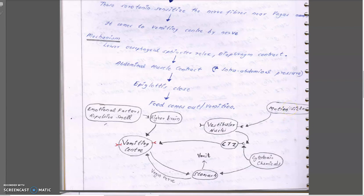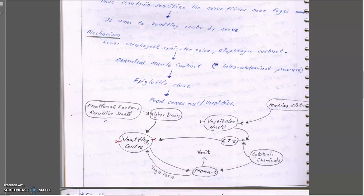Looking at the diagram: motion sickness produces signals sent to the vestibular nuclei, which via its receptors send the message to the CTZ. The CTZ induces vomiting via the vagus nerve to the stomach. Emotional factors — repulsive smell and sight — coordinate signals to the higher brain, which goes directly to the vomiting center. In poisoning, cytotoxic chemicals increase in the blood, the circulating blood reaches the CTZ, and since the CTZ is outside the blood-brain barrier it senses the high toxin levels and informs the vomiting center to expel the poison.